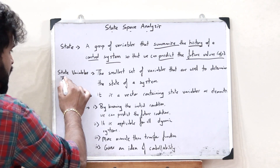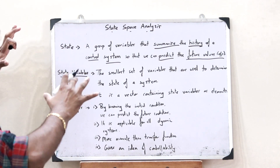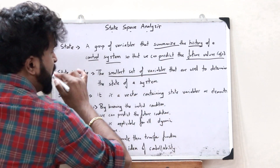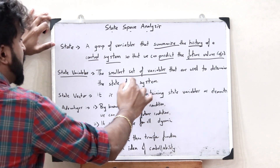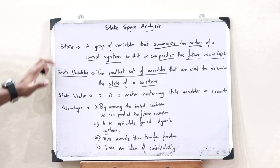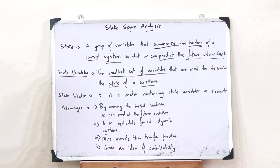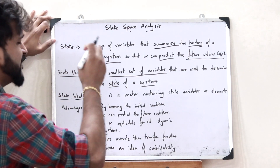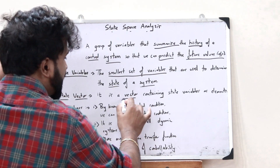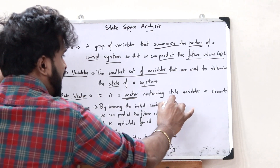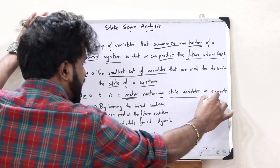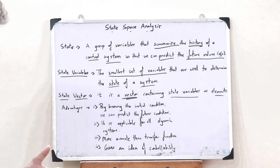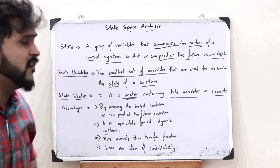State variables are a small set of variables that are used to determine the state of a particular control system — it is self-explanatory. Finally, we have something referred to as a state vector, which is nothing but a vector value that contains the state variables as its elements. With the help of these, this is how we actually do state-space analysis.